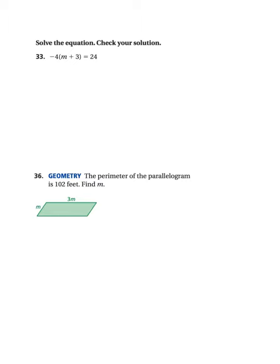And then our next one, we're going to solve this equation. This time, we need to use the distributive property. So, we'll multiply negative 4 times M. And then, we'll multiply negative 4 times 3.